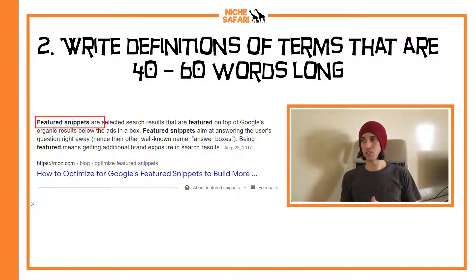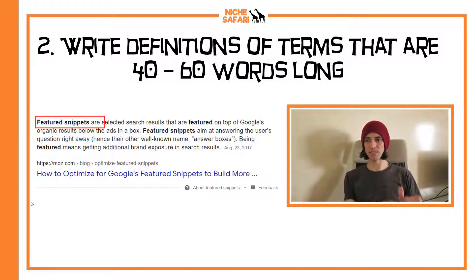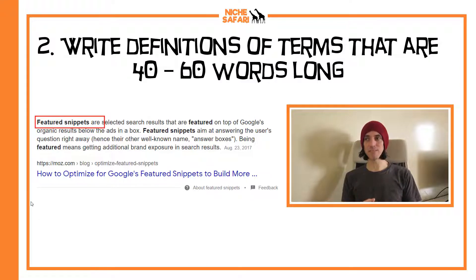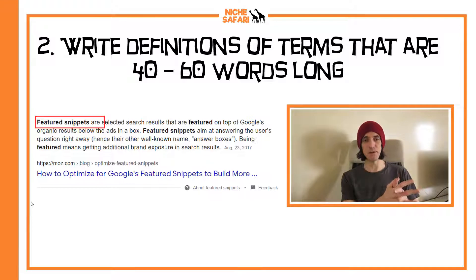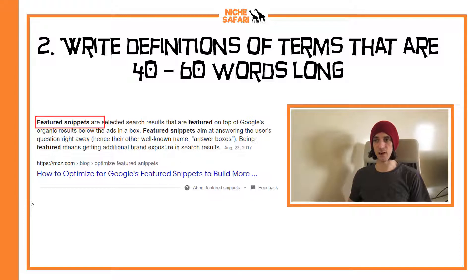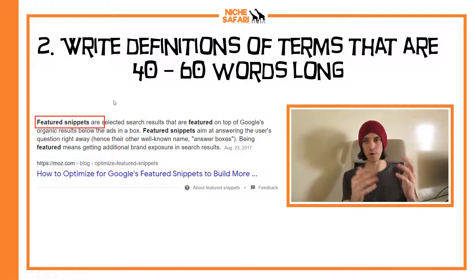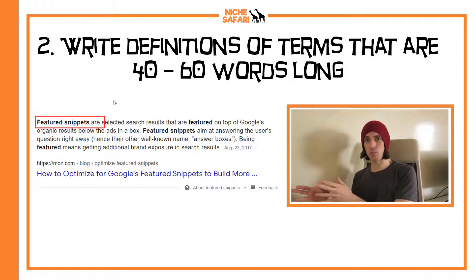Tip two: write definitions of terms that are 40 to 60 words long. I believe it was Ahrefs, or possibly Moz, that did a study showing featured snippet paragraphs tend to be 40 to 60 words long. So if you're writing a definition and you want it to appear in the featured snippet, try to make that definition 40 to 60 words long. You'd want to start with something like 'featured snippets are...' or 'cameras are...' and then finish with your definition.